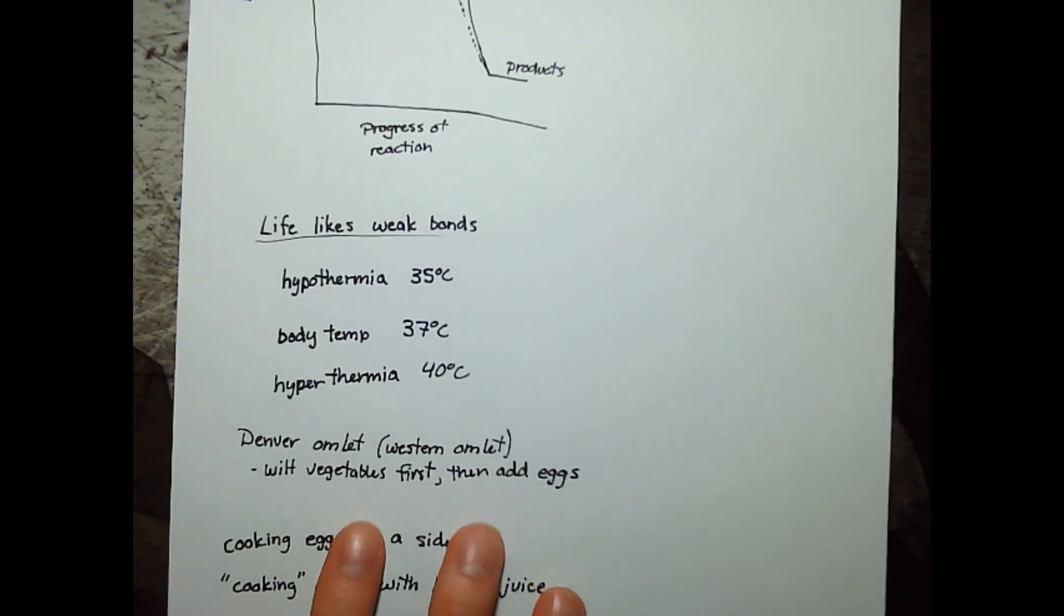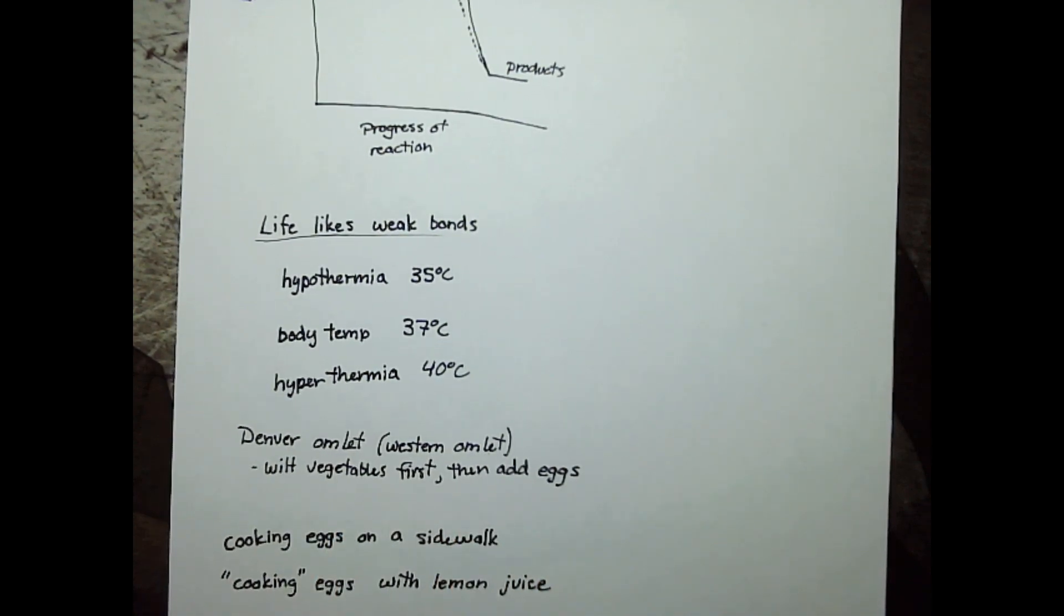For example, I have here normal body temperature, that's 37.0 degrees Celsius. On the cold end, hypothermia is 35 degrees Celsius. So if your internal core temperature drops to 35°C or below, you're considered hypothermic.